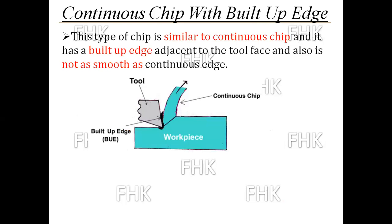The third type is the continuous chip with built-up edge. This type of chip is similar to a continuous chip, but it has a built-up edge adjacent to the tool face. You can see in the image that the built-up edge forms on the chip, exactly near the tool face. It is not as smooth as a continuous chip — that is the basic difference from a continuous chip.